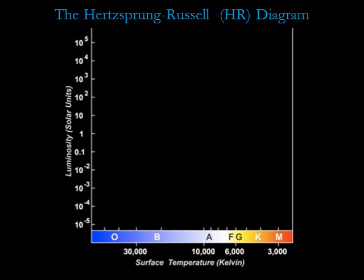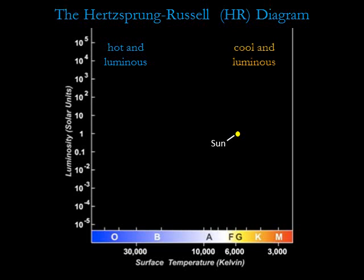For example, our sun is a spectral type G2 star with a luminosity of one solar luminosity. On an HR diagram, stars near the upper left are hot and luminous, stars near the upper right are cool and luminous, stars near the lower right are cool and dim, and stars near the lower left are hot and dim.